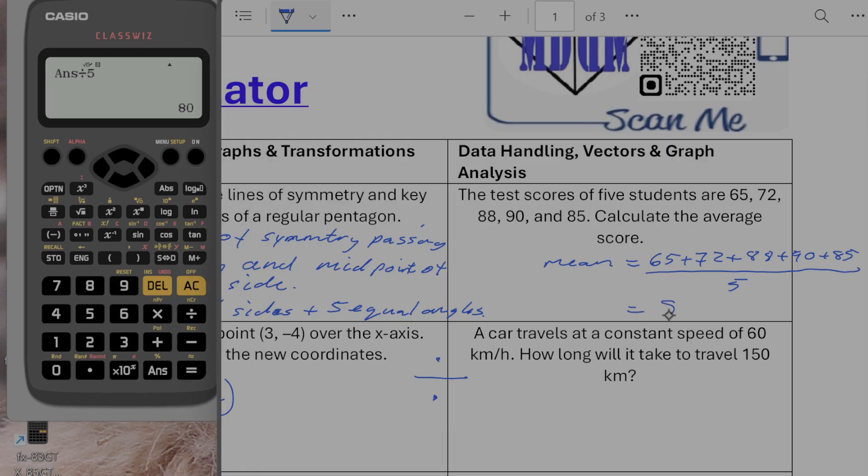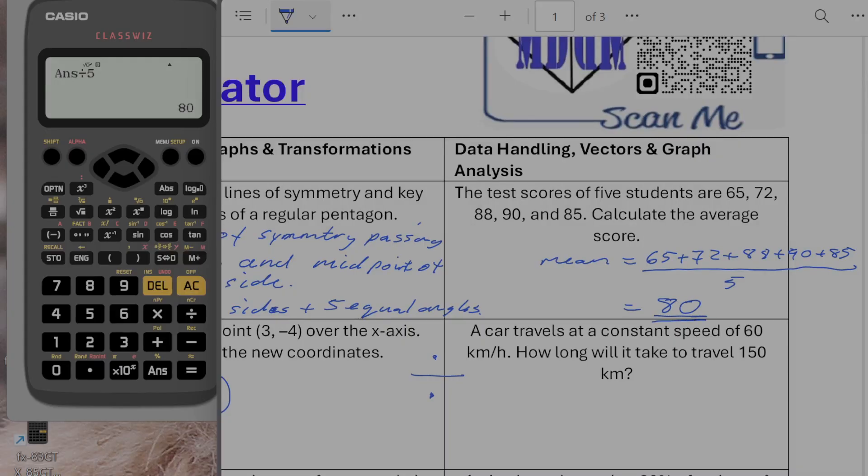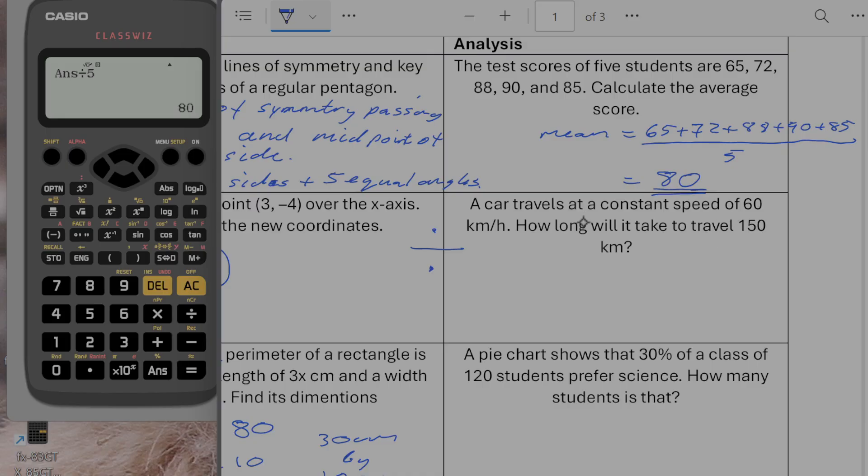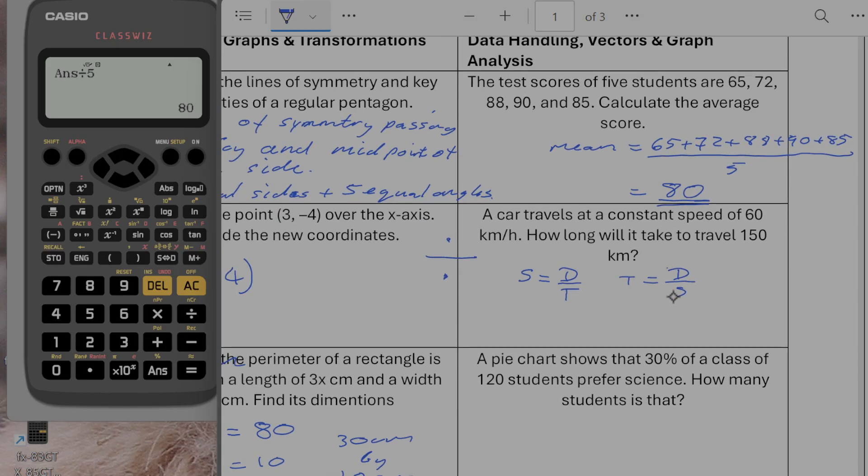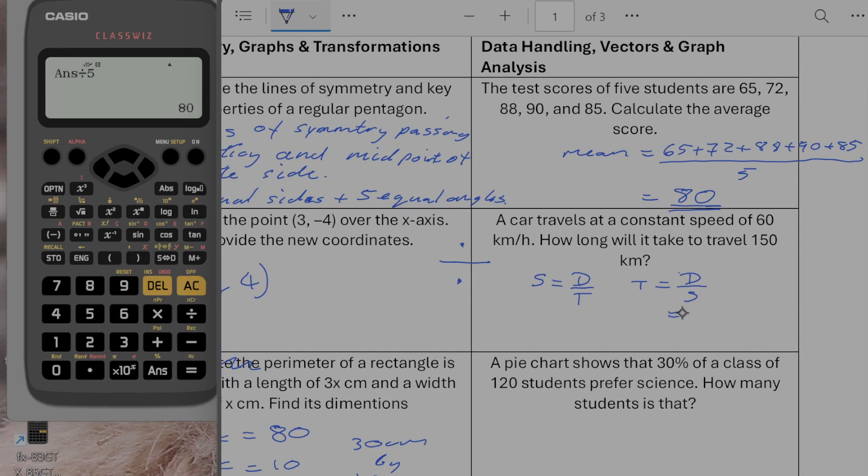A car travels at constant speed of 60 kilometers per hour. How long will it take to travel 150 kilometers? Well if speed is equal to distance divided by time then time is going to be equal to distance divided by speed. So that's going to give us the distance was 150 divided by 60. So 150 divided by 60 gives us 2.5. So 2 hours and 30 minutes.